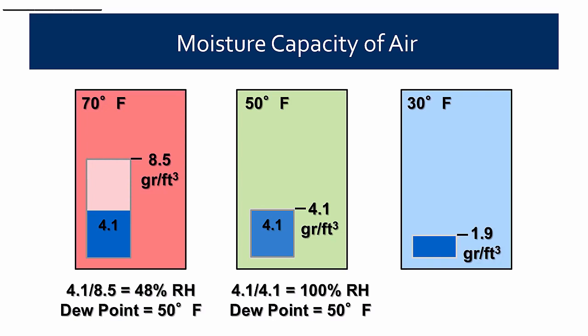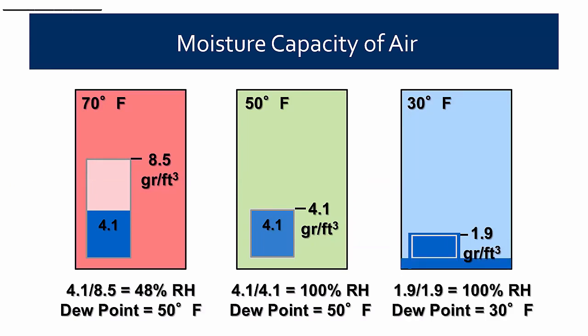If we cool that air down to 30 degrees Fahrenheit, it will only hold 1.9 grains per cubic foot, so that excess water has to leave — it can't be in the air anymore. The remaining 1.9 grains leaves the air at 100% relative humidity, but we've taken moisture out of the air, so the dew point changes. The only way dew point can ever change is if you add moisture or take moisture out. Dew point is not changed by temperature like relative humidity — which is why we want to look at dew point rather than relative humidity when examining condensation moisture problems.